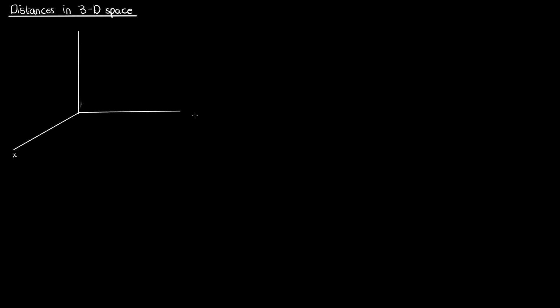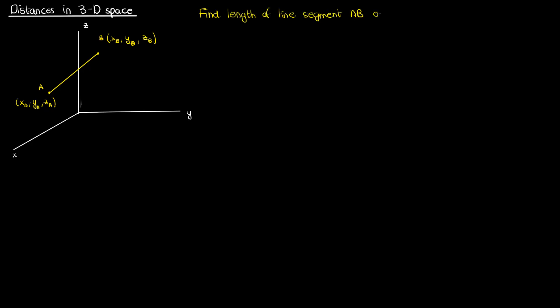So let's draw our three-dimensional Cartesian coordinate system with our three axes. I'm going to label the axes with the coordinates x, y, and z that we're accustomed to. Suppose now that I have a line segment defined by its two endpoints, a given by (x_a, y_a, z_a) and b given by (x_b, y_b, z_b). Suppose also that I want to find the length of this line segment, a length which I'll call capital S.